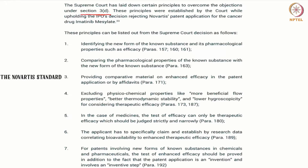The first step of the Novartis standard pertains to identifying the new form of the known substance. You have to first identify the new form of the known substance — the relevant paragraphs from the judgment are provided in brackets. The second step involves comparing the pharmacological properties of the known substance with the new form of the known substance.